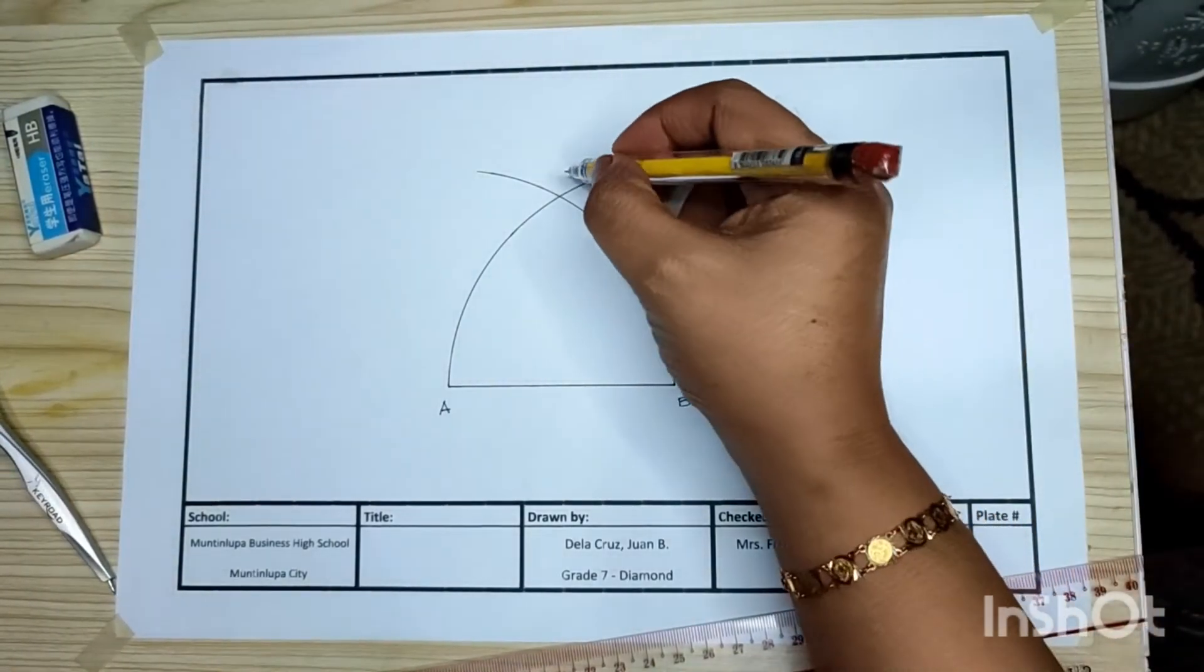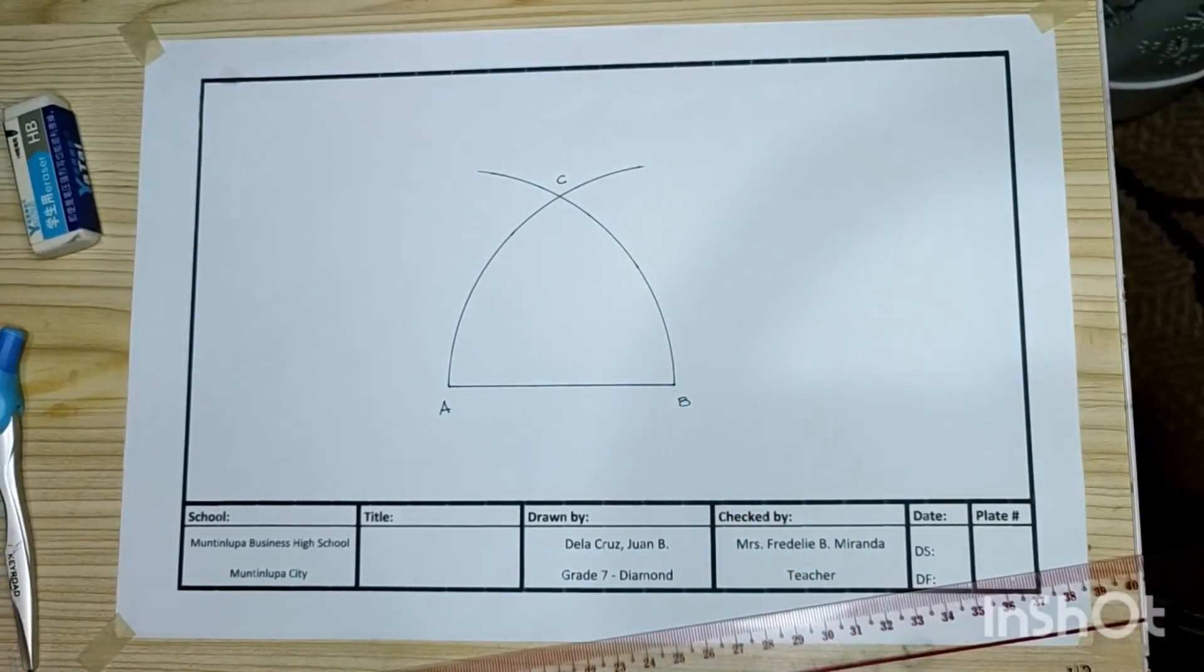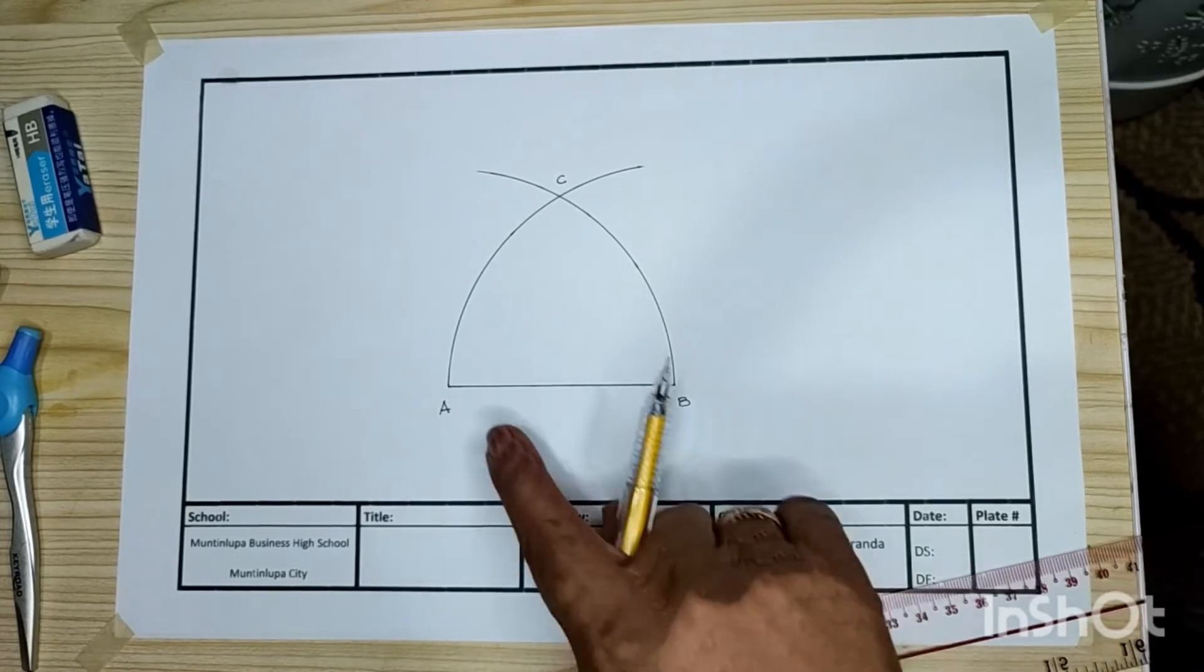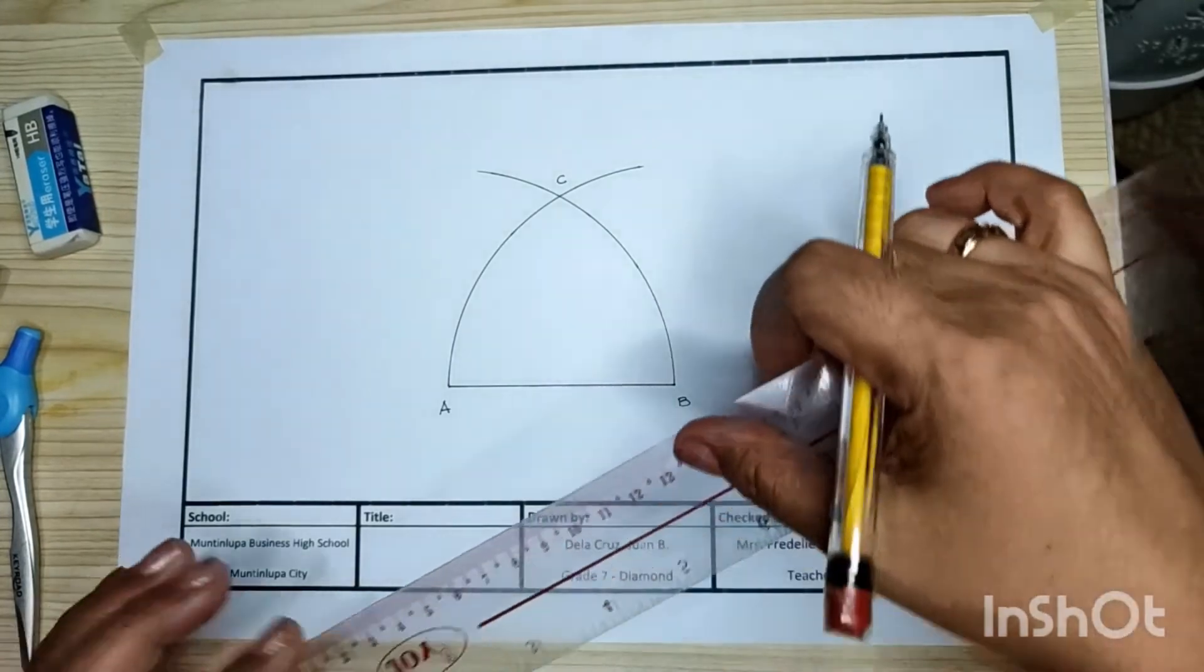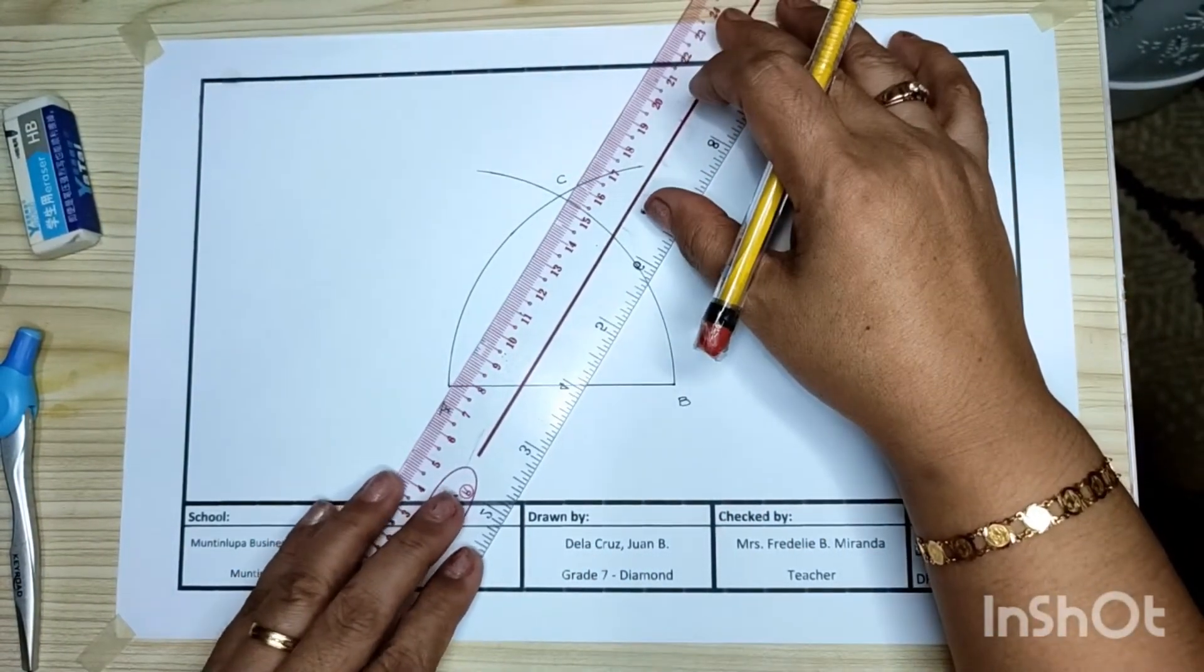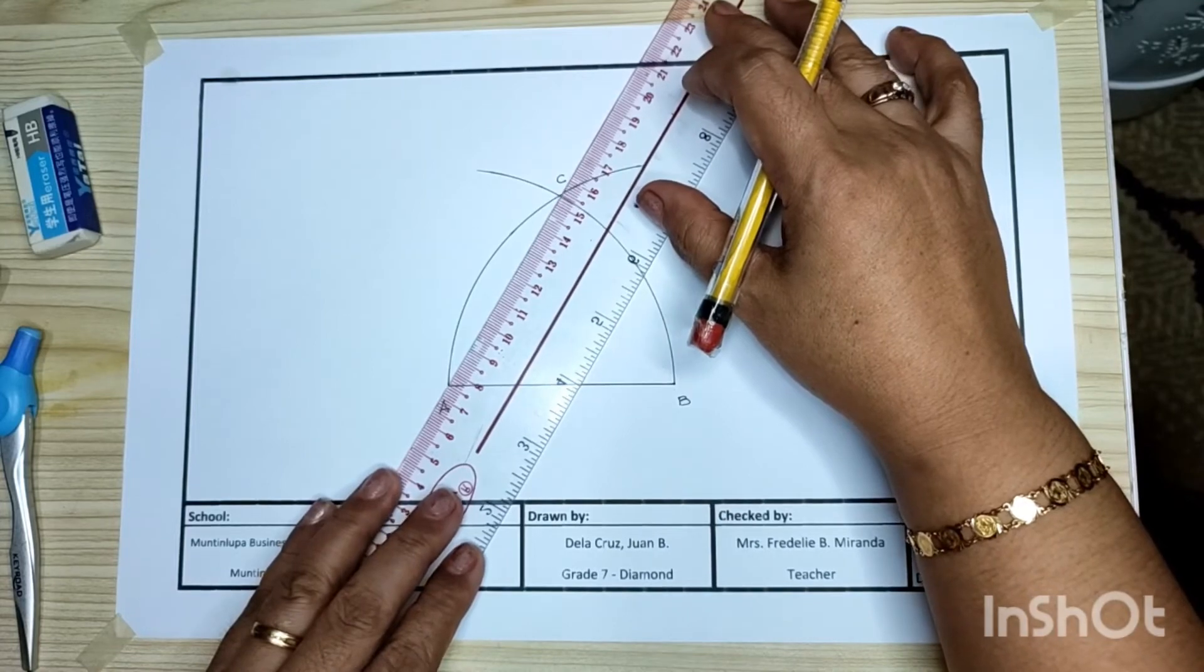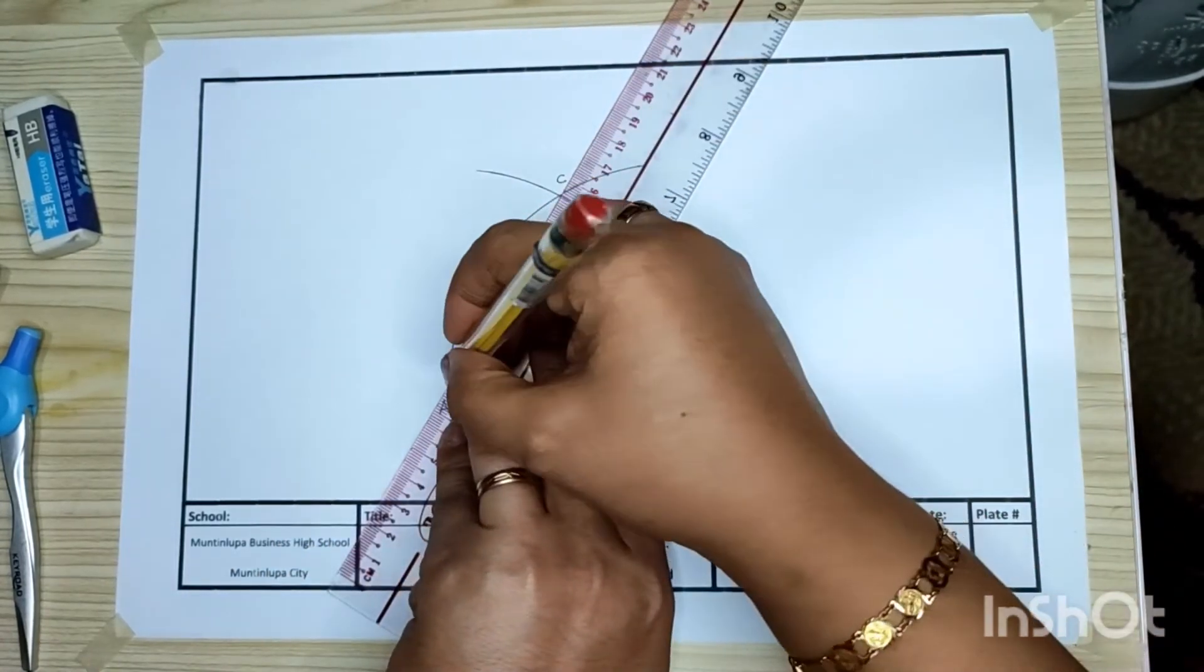Name this point C. Connect point A to C using your foot rule. From point A to point C, then draw a straight line.